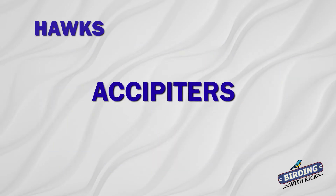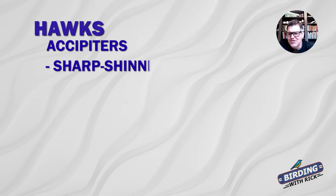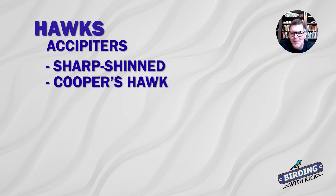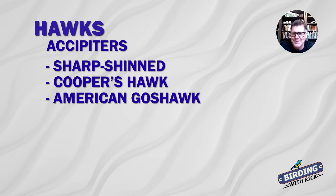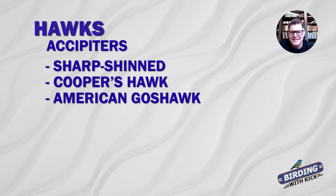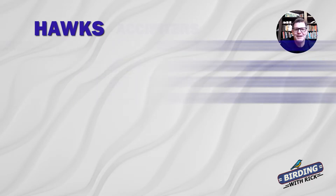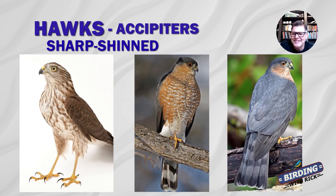We're going to start with the accipiters — the sharp-shinned and the Cooper's, which are what most people confuse. Hard to tell those apart, but I'll give you the tricks. And then the goshawk. It used to be called the northern goshawk, but just in 2023 its name was changed to the American goshawk. They did that because they split a European version and the American version — they used to be lumped together, now they're split and needed a new name. So they chose the American goshawk. Starting with the accipiters, the long skinny tails, starting at the smallest: the sharp-shinned.